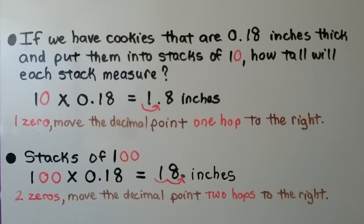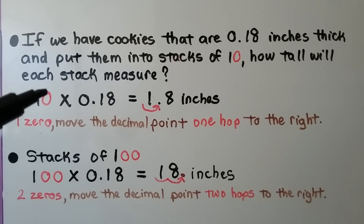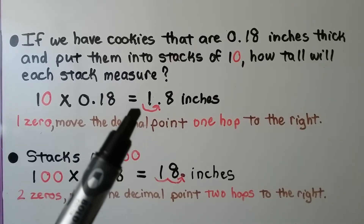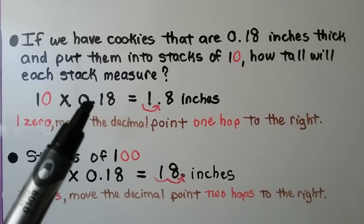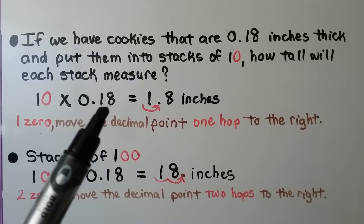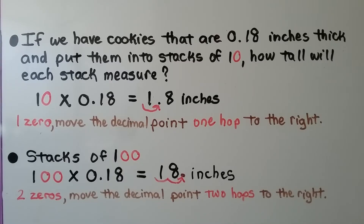If we have cookies that are 18 hundredths inches thick each cookie, and put them into stacks of 10, how tall will each stack measure? We can multiply 10 times 18 hundredths. We have one zero, so we're going to move the decimal point one hop to the right. It was in between the zero and the 1. It's going to move one hop to the right, in between the 1 and the 8. It'll be 1 and 8 tenths inches.